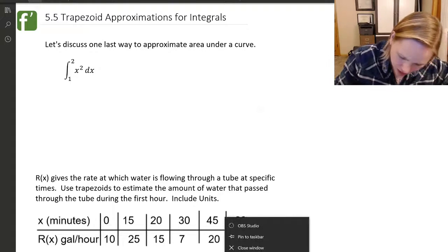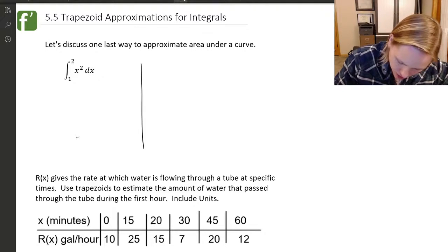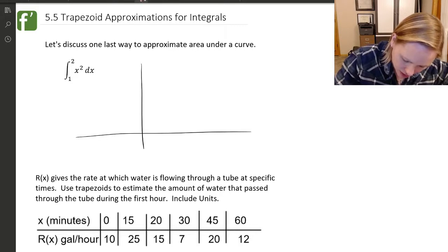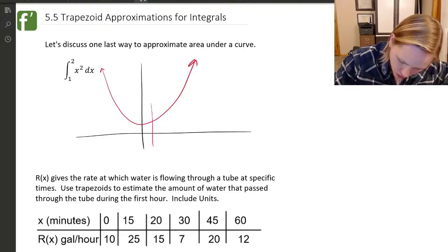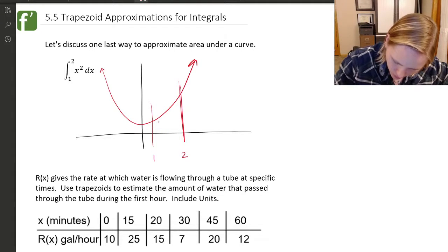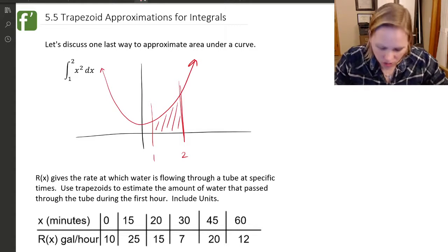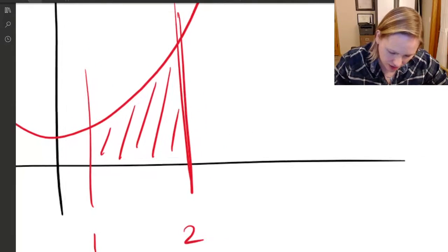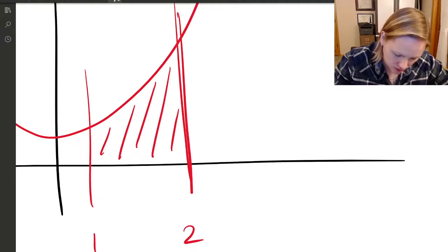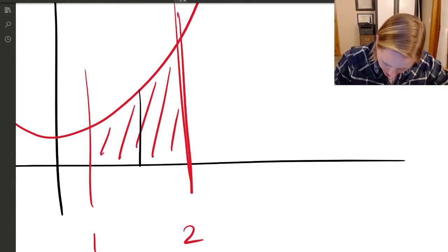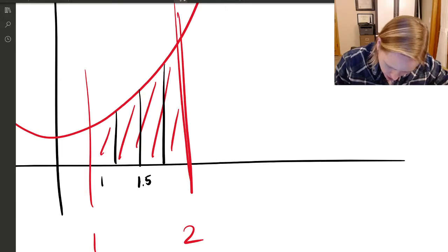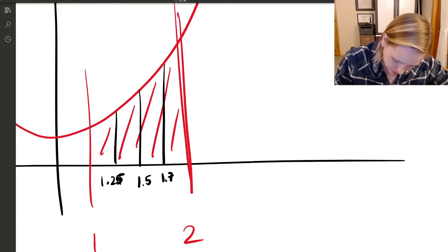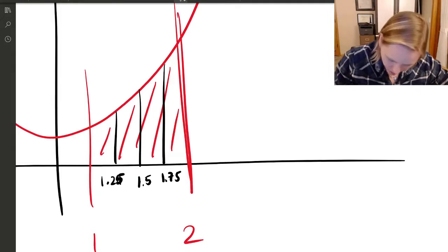Rather than taking this function x squared, if we draw a picture of the graph, from 1 to 2 we're finding this area. Suppose we divide it into little subintervals. I'm going to divide it in half at 1.5, and then I'll divide it again into four little subintervals. So if I divide them evenly, now I'm in quarters: 1, 1.25, 1.5, 1.75, and then 2.